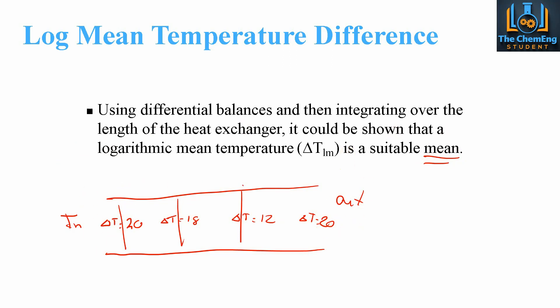There are two types of systems we're going to consider here: counter current flow and co-current flow. We're going to see why the counter current flow is a better option and is the most suitable and widely used within the industry.